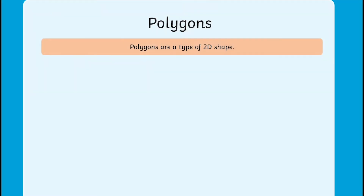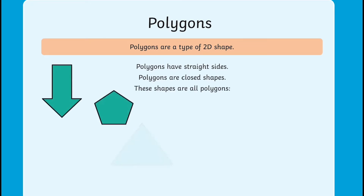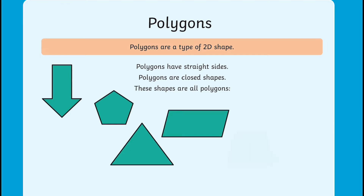In the second lesson we will learn to identify regular and irregular shapes. Another way to describe 2D shapes is polygons. Polygons are a type of 2D shape — they have straight sides and are closed shapes.